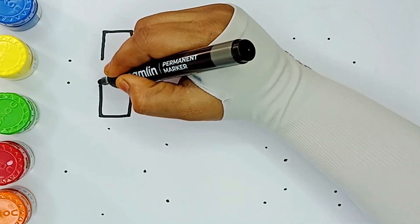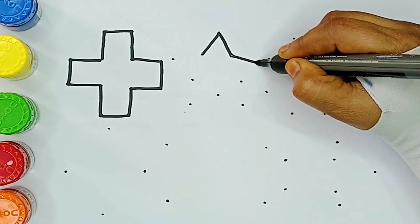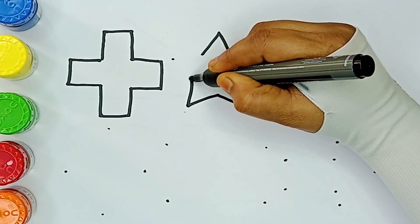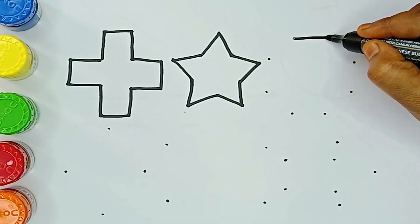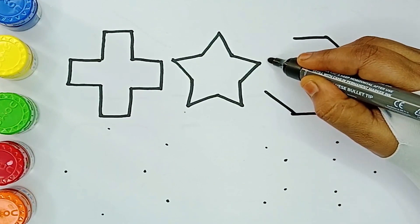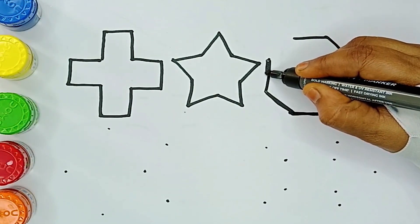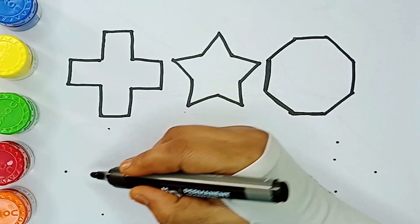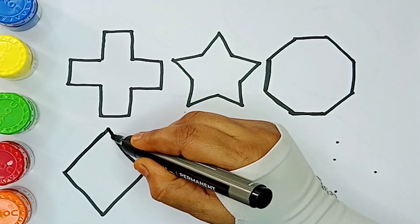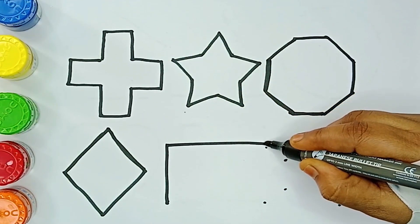Cross. Star. Octagon. Rhombus. Rectangle.